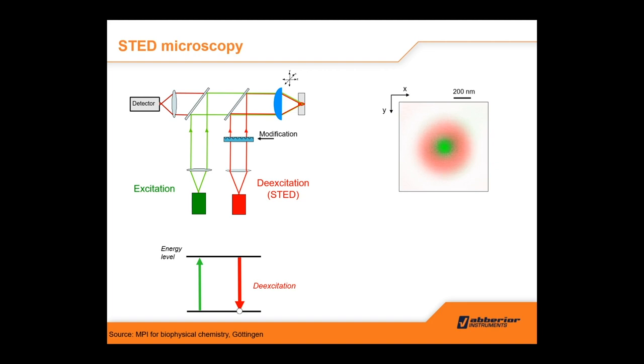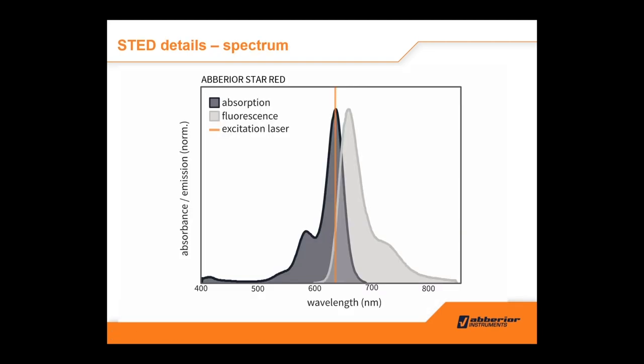If you shine the STED light onto excited molecules, it will de-excite them — bring them back to the ground state — by a process called stimulated emission, a feature found by Einstein quite some time ago. Stefan's idea was to shape this light into a donut so that everything is switched off in the vicinity of the central spot. Only the central spot remains and your resolution is much enhanced. In the spectrum of the dye, just as in confocal, you excite the dye at the excitation maximum and detect the emission. For a dye like STAR Red, you excite at 640 nm and deplete with the STED laser at 775 nm and detect in between.